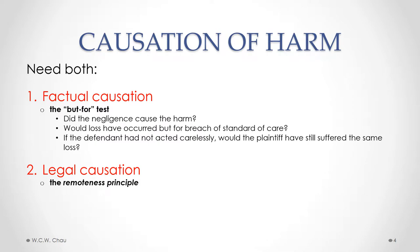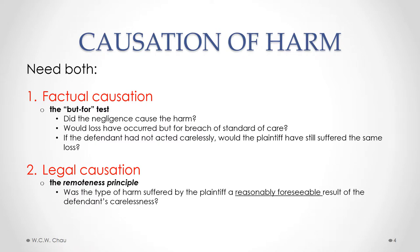Legal causation applies what we call the remoteness principle. The remoteness principle asks: was the type of harm suffered by the plaintiff a reasonably foreseeable result of the defendant's carelessness? This rule is intended to eliminate injuries or losses that are still factually connected — there is factual causation connecting the two — but the harm is seen to be too far-fetched. It's too remote.